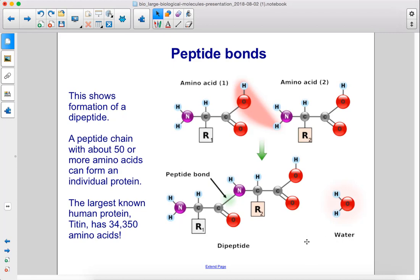The largest known human protein, titin, has 34,350 amino acids.